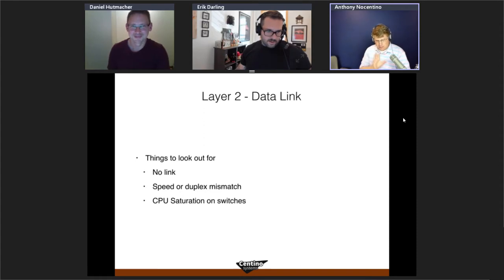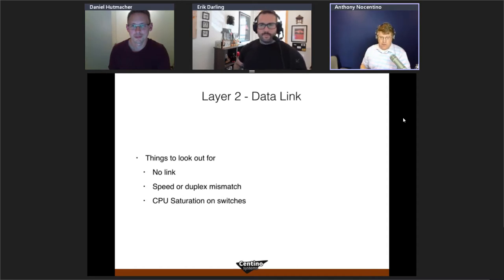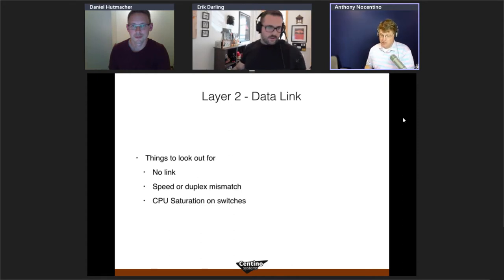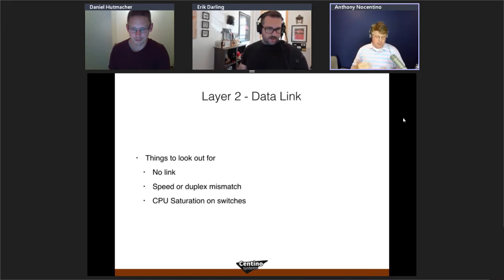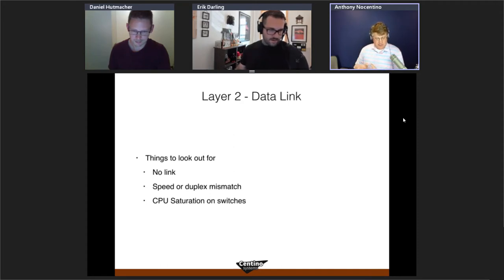Duplex and speed issues are detectable before production — always test that a purchased 1G/10G/40G link is actually delivering expected throughput. In production, watch for a sudden cliff in performance after hardware changes. These issues typically show up as CRC errors, runts, and giants on switch ports, or through NIC performance counters in Windows or Linux.